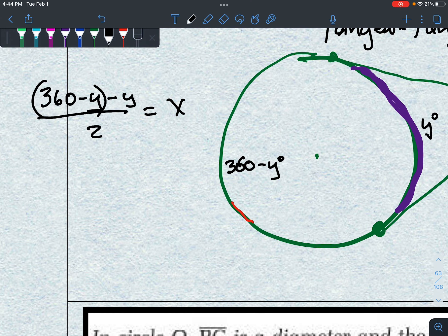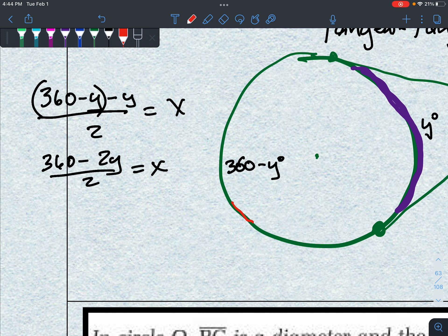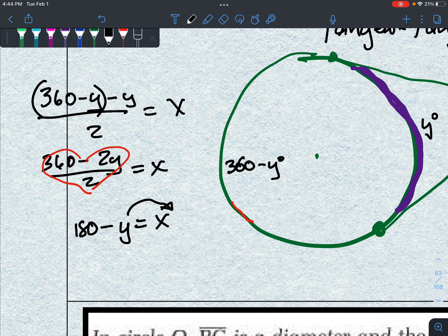So cleaning this up a little bit, 360 minus 2y divided by 2 is x. So now if I do my division, divide the 360 by the 2, divide the 2 by the 2, we get 360 divided by 2 is 180, 2y divided by 2 is y equals x.